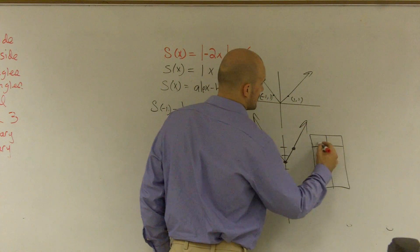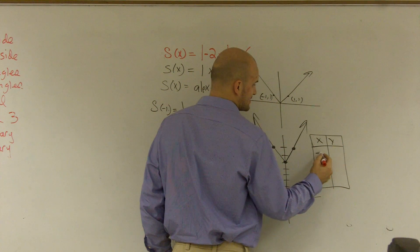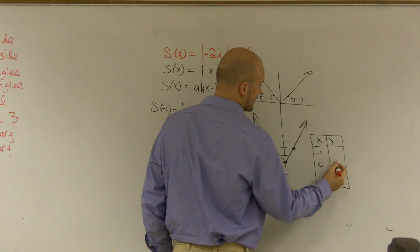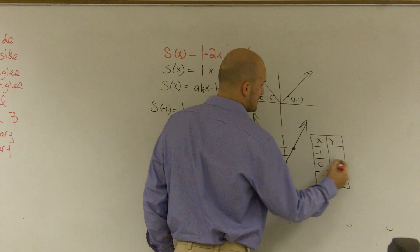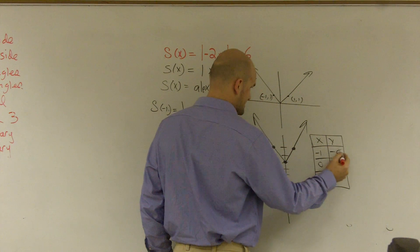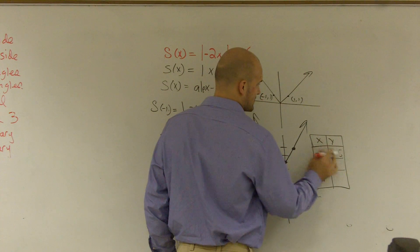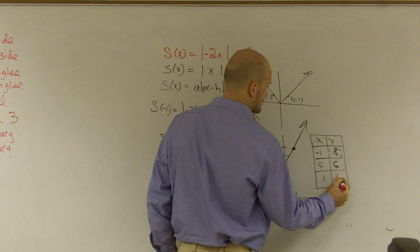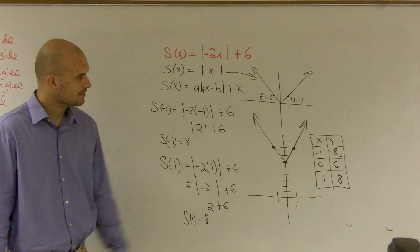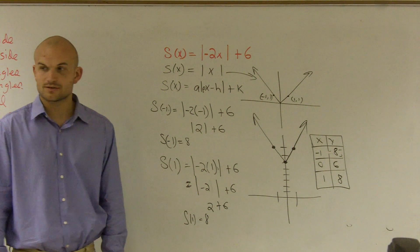You could have made a table like this and just said, well, x, y. And you just picked negative 1, 0, and 1. And what you would have gotten is the exact same answers. And that's how you graph an absolute value function.